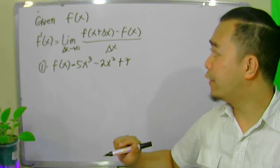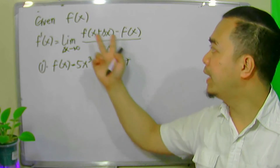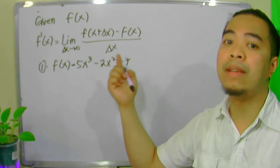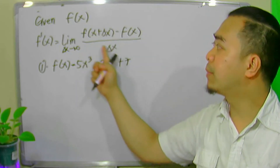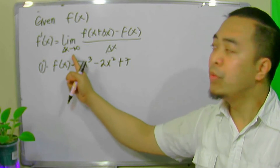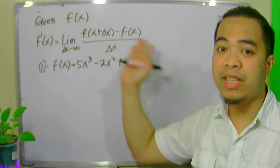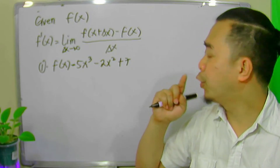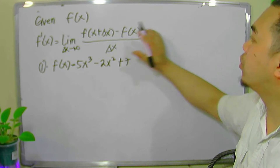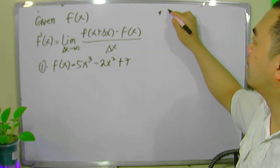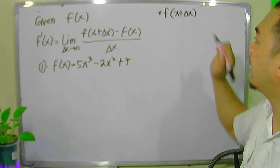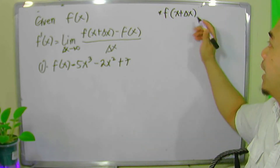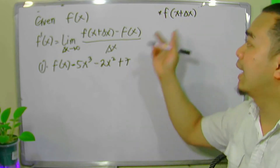If we look at the definition, we actually need two expressions. We need to evaluate the function at x plus delta x, subtract it with the function itself, and we are evaluating the limit of this expression as delta x approaches zero. So to compute the derivative of this function using the definition, we have to recall our skills in evaluating a limit. So let's first compute f of x plus delta x. This means we just have to evaluate the function at x plus delta x — we substitute x plus delta x in the given function.